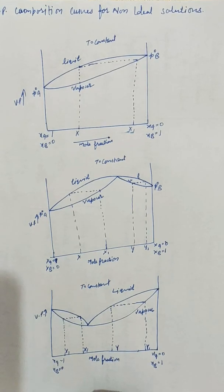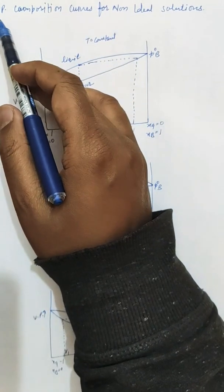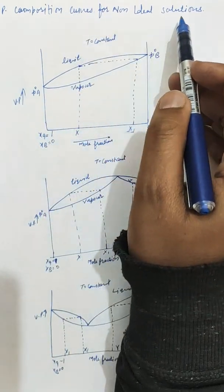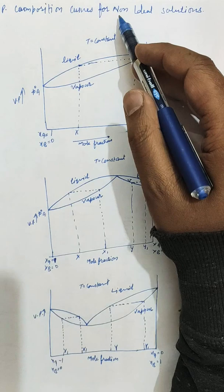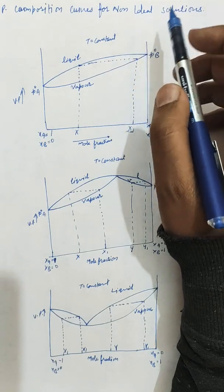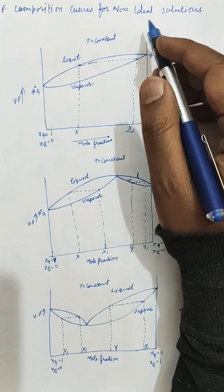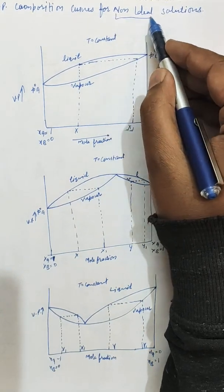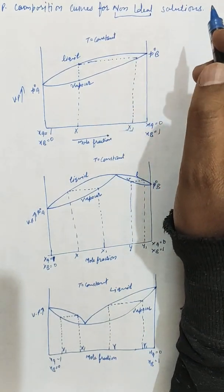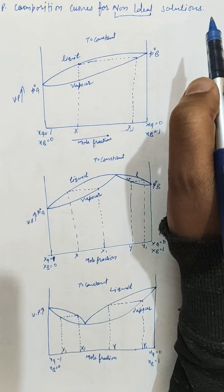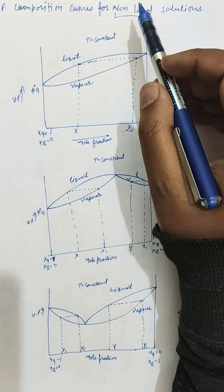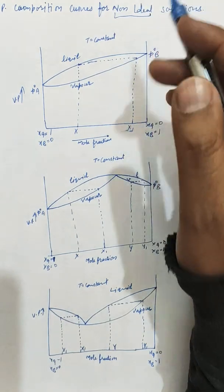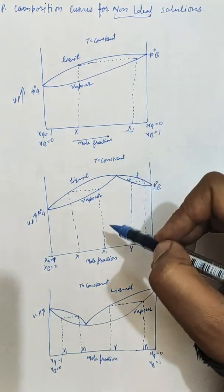Our next topic is vapor pressure composition curves for non-ideal solutions. Non-ideal solutions are those which don't obey Raoult's law — they may also be called real solutions, just like non-ideal gases are called real gases. There are three types of curves: Type 1, Type 2, and Type 3, which we will discuss one by one.